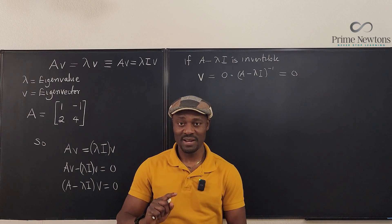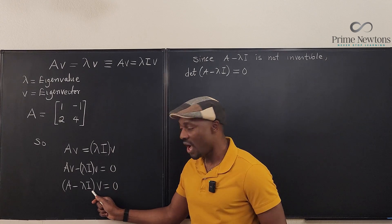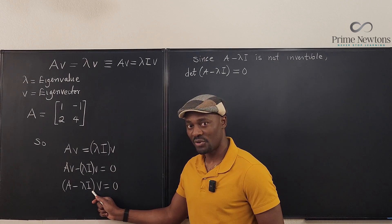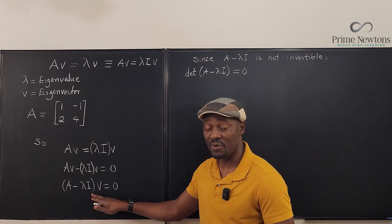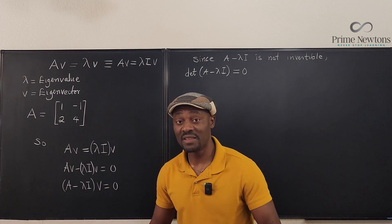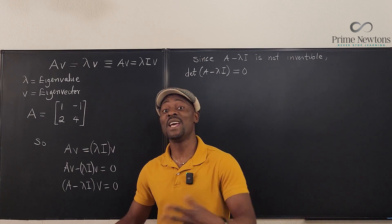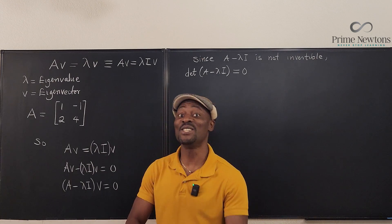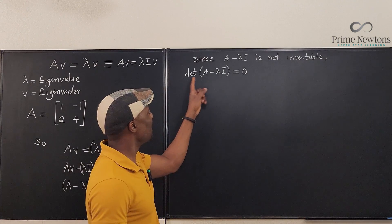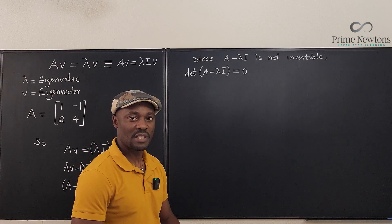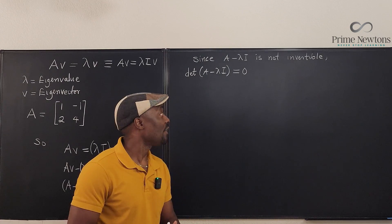Since (A - λI) is not invertible, the determinant of (A - λI) must equal zero. A matrix is not invertible if and only if its determinant equals zero. So we know det(A - λI) = 0, and that is our key to finding both the eigenvalue and the eigenvector.